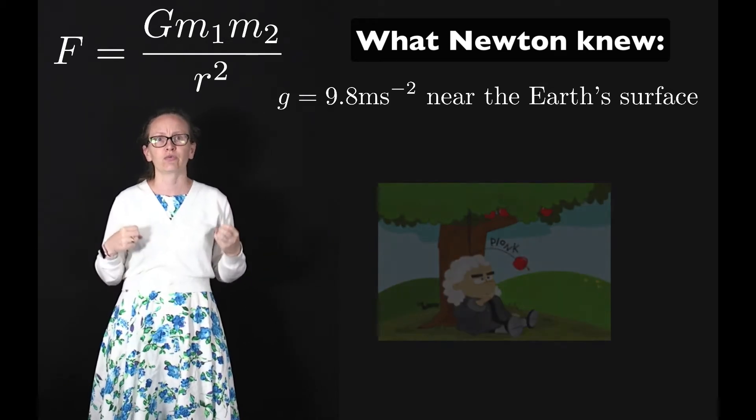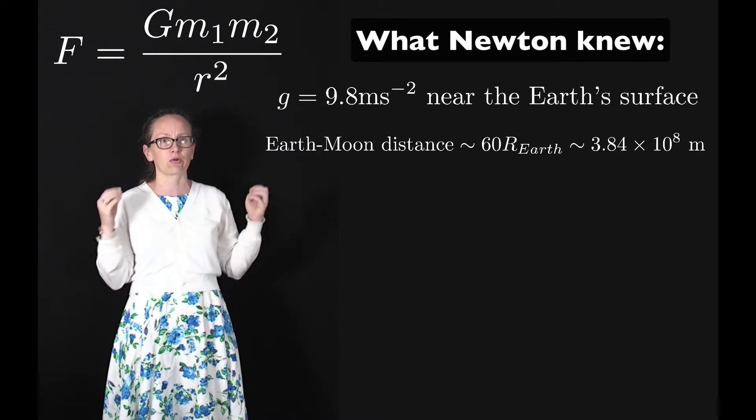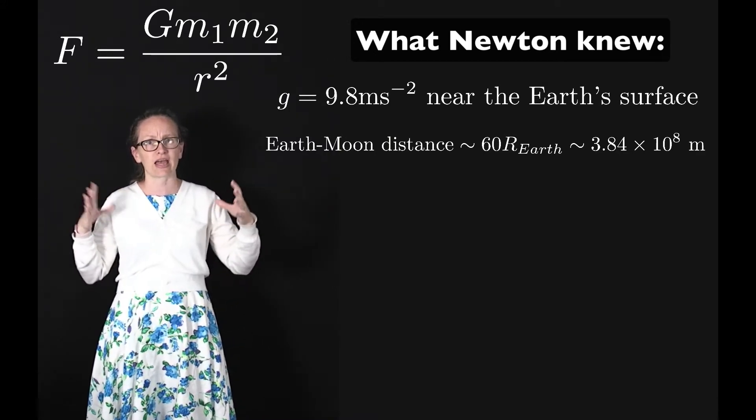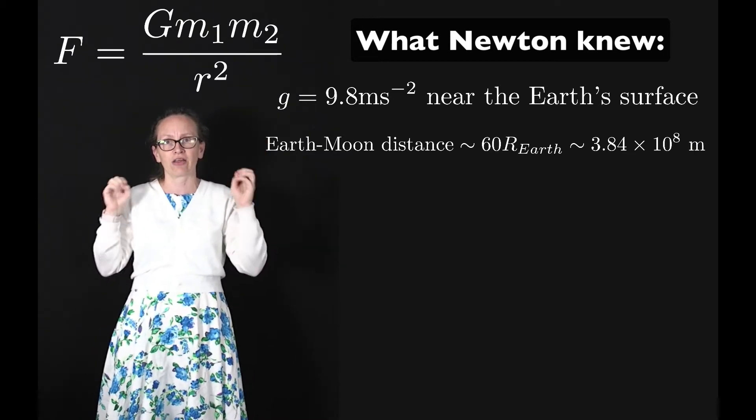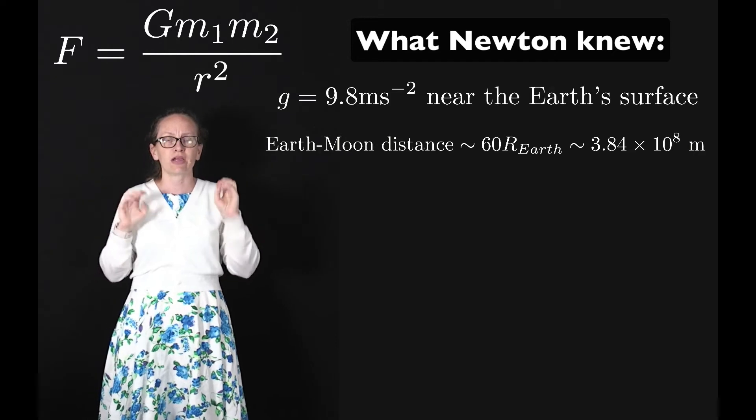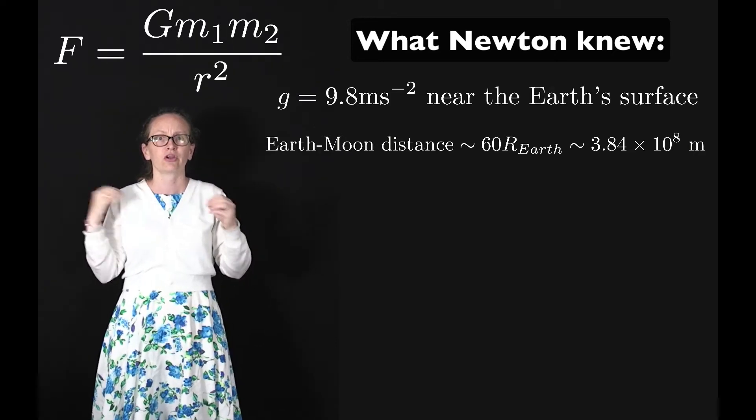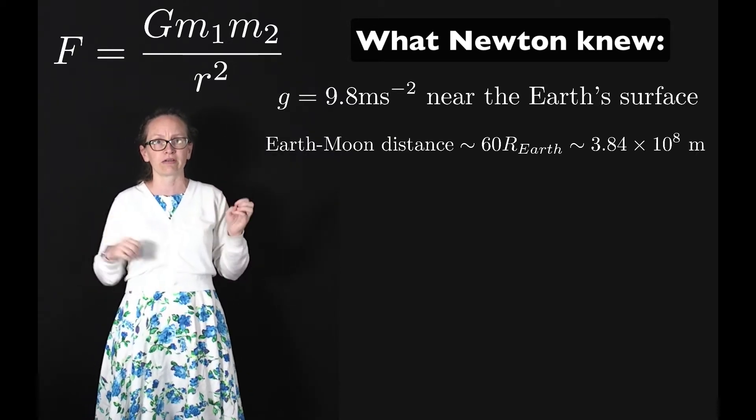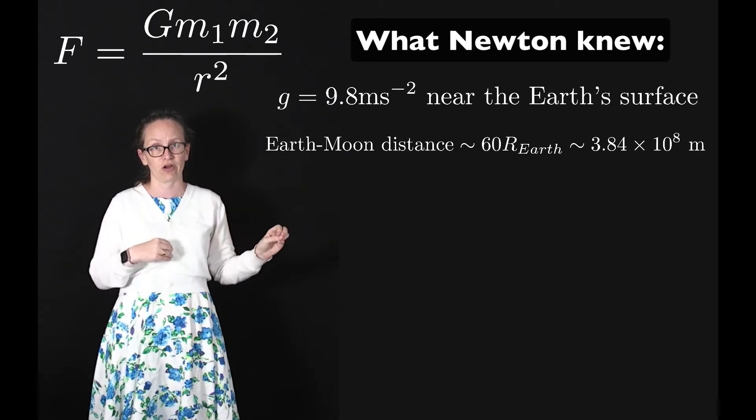The other thing he knew was that the Moon was approximately 60 Earth radii away from the center of the Earth. People during his time were able to work out how far the Moon was away by measuring the size of the Earth's shadow on the Moon during eclipses. He knew that the Moon was around 3.84 times 10 to the 8 meters away from the center of the Earth.